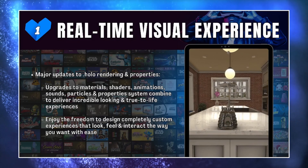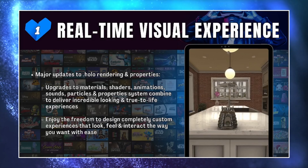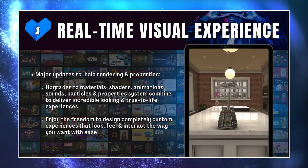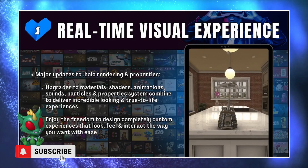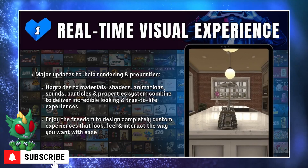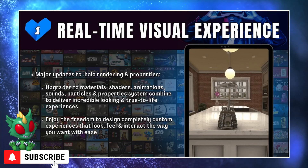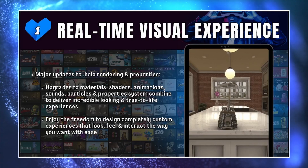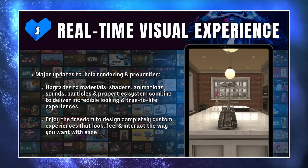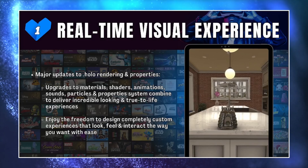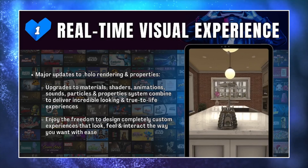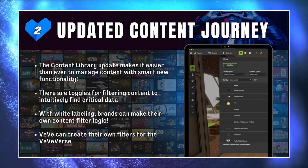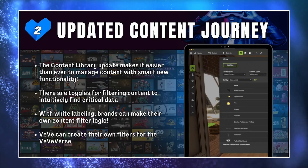The specific updates to their hollow rendering and properties include materials, shaders, animations, and sounds. Materials would be things like concrete, granite, or wood. Shaders relate to asset pack textures like brick walls or wood floors. Animations can include pre-loaded animations for objects, and Cavernous also provides the option to create your own. Sound effects, particles, and the property system combine to deliver incredible, true-to-life experiences. They've also updated their content journey, making it easier to manage content with smart new functionality.